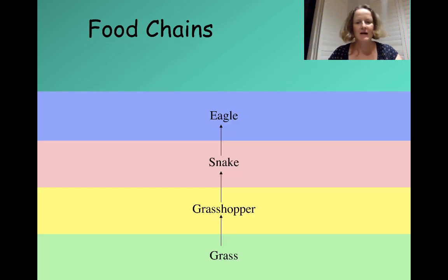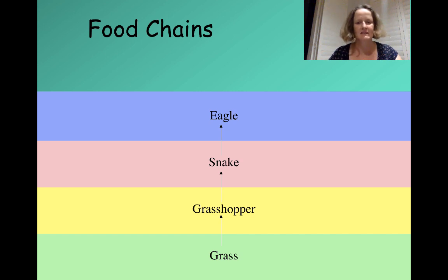Let's think about this food chain with four steps in it. Grass is eaten by a grasshopper, grasshoppers are eaten by snakes, snakes are eaten by eagles.